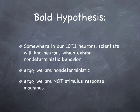This is a high scientific hypothesis. I could be proven wrong on this one. Somewhere in our 10 to the 11th neurons, scientists will find neurons which exhibit non-deterministic behavior. And I'm not just talking about chaos. Any non-linear system has this kind of chaotic behavior. But now I'm talking about genuine non-determinism. I mean, really the real thing, real non-determinism. Ergo, we are non-deterministic. Ergo, we are not stimulus response machines. That's my bold hypothesis.